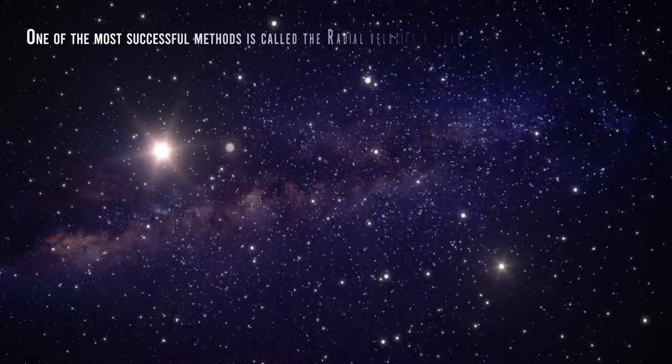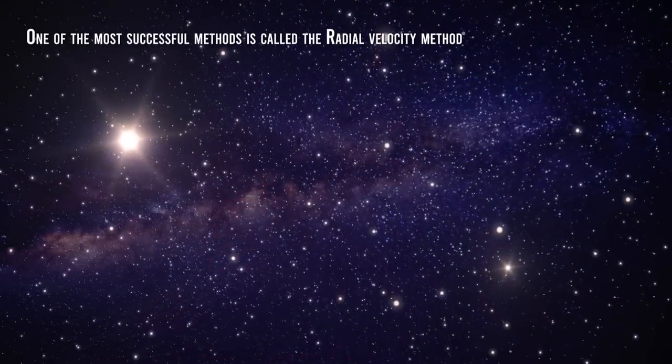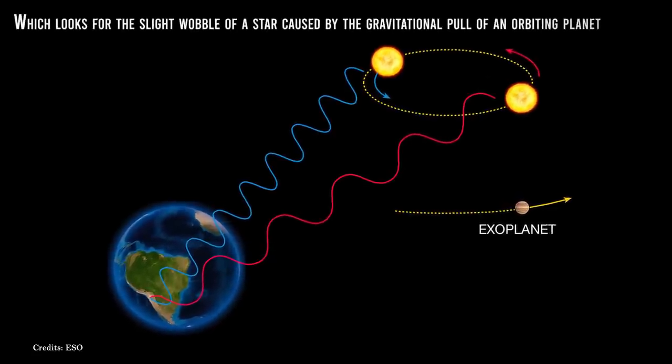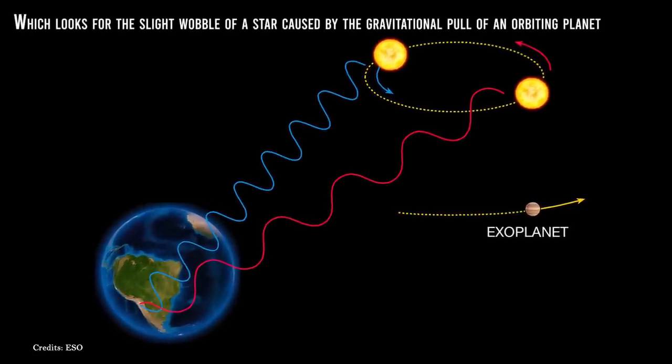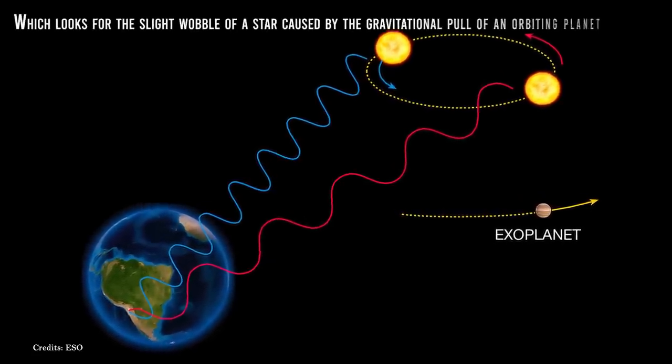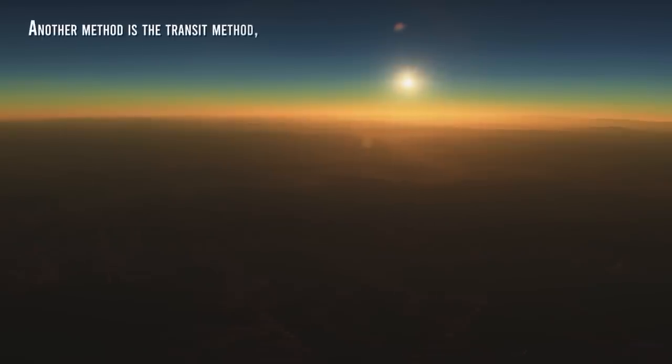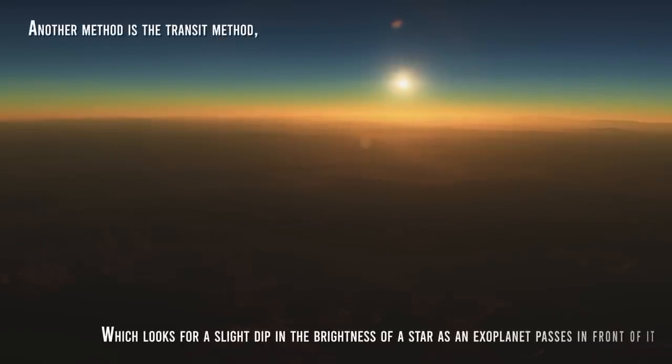One of the most successful methods is called the radial velocity method, which looks for a slight wobble of a star caused by the gravitational pull of an orbiting planet. Another method is the transit method, which looks for a slight dip in the brightness of a star as an exoplanet passes in front of it.